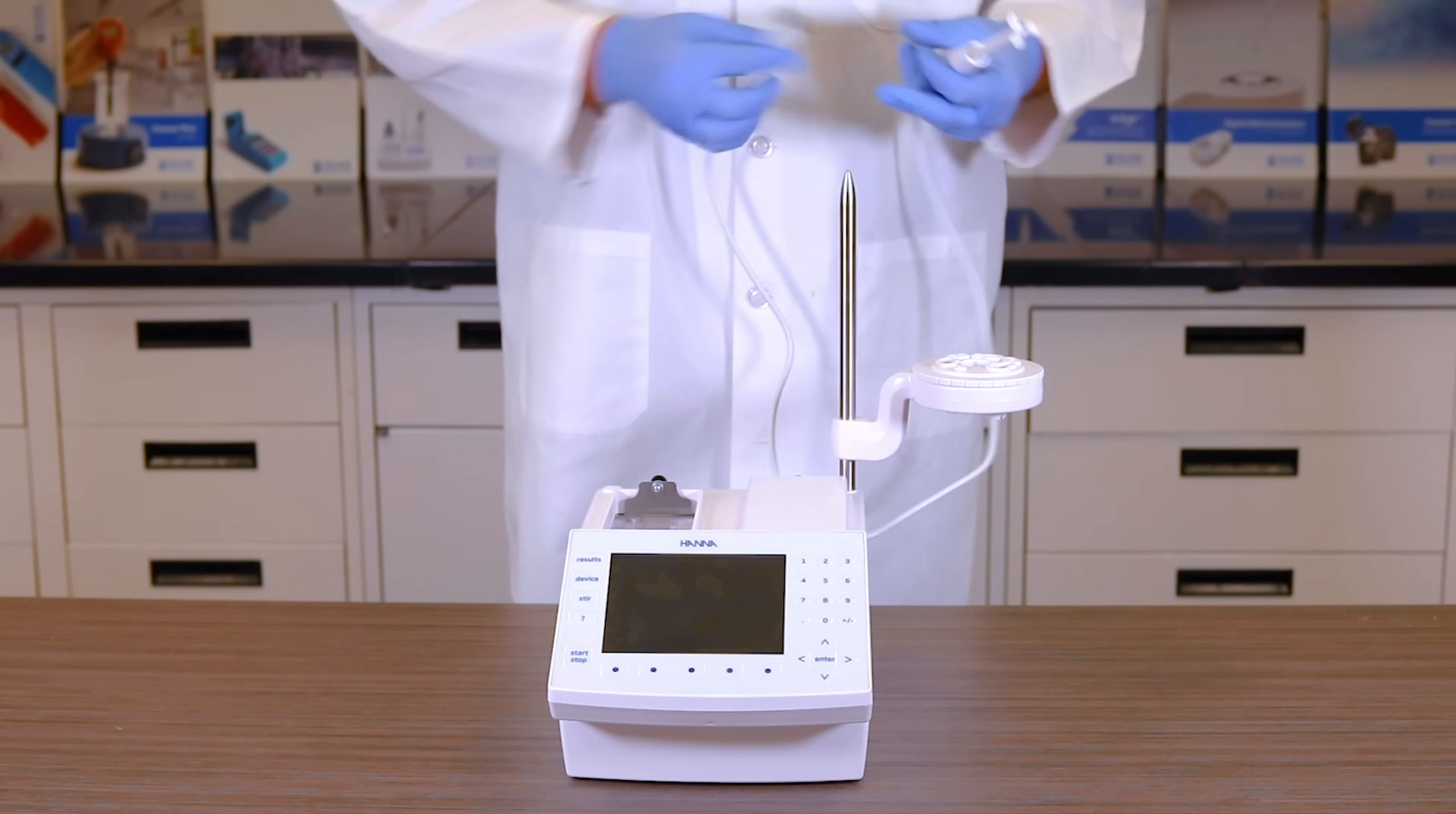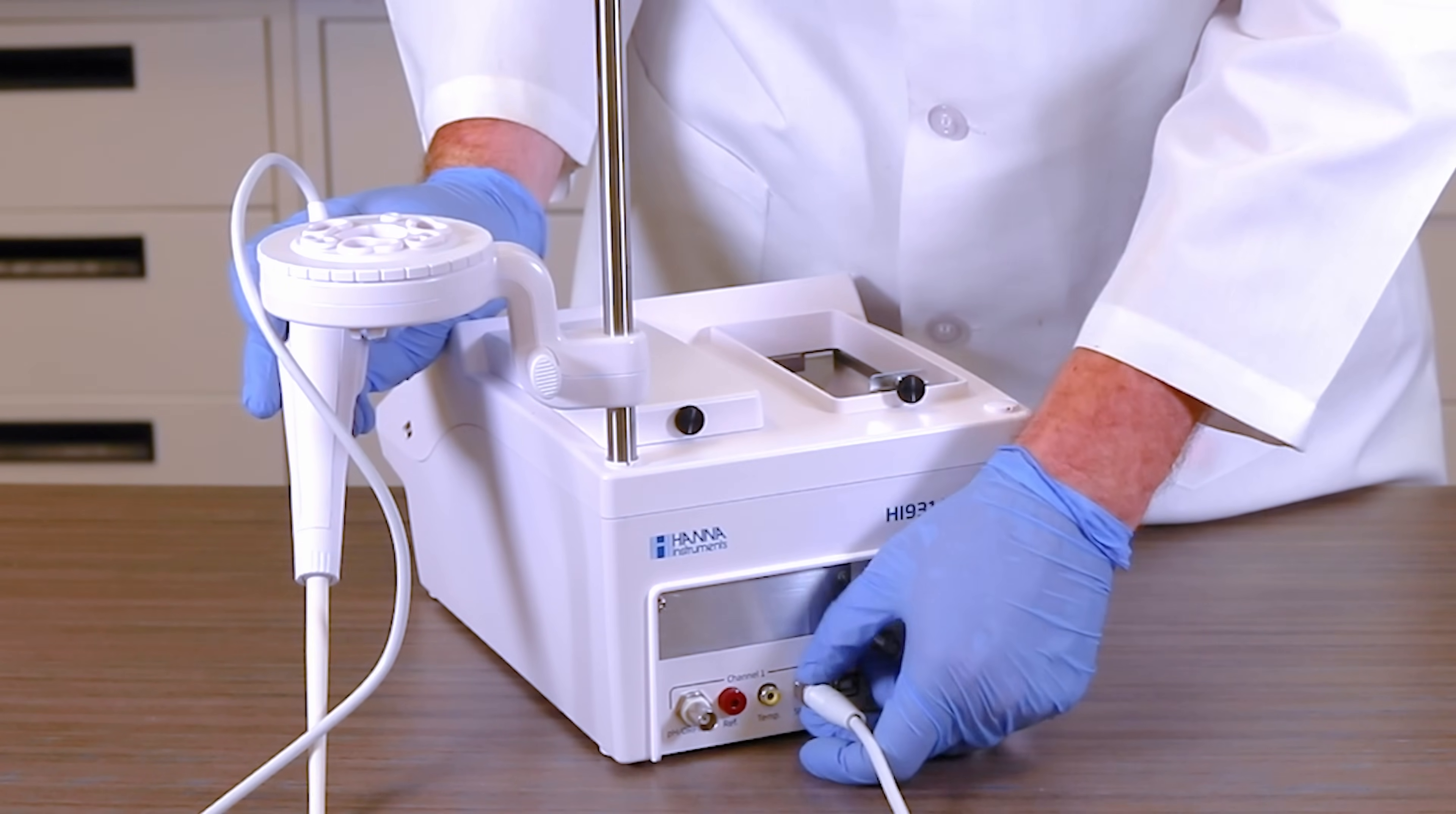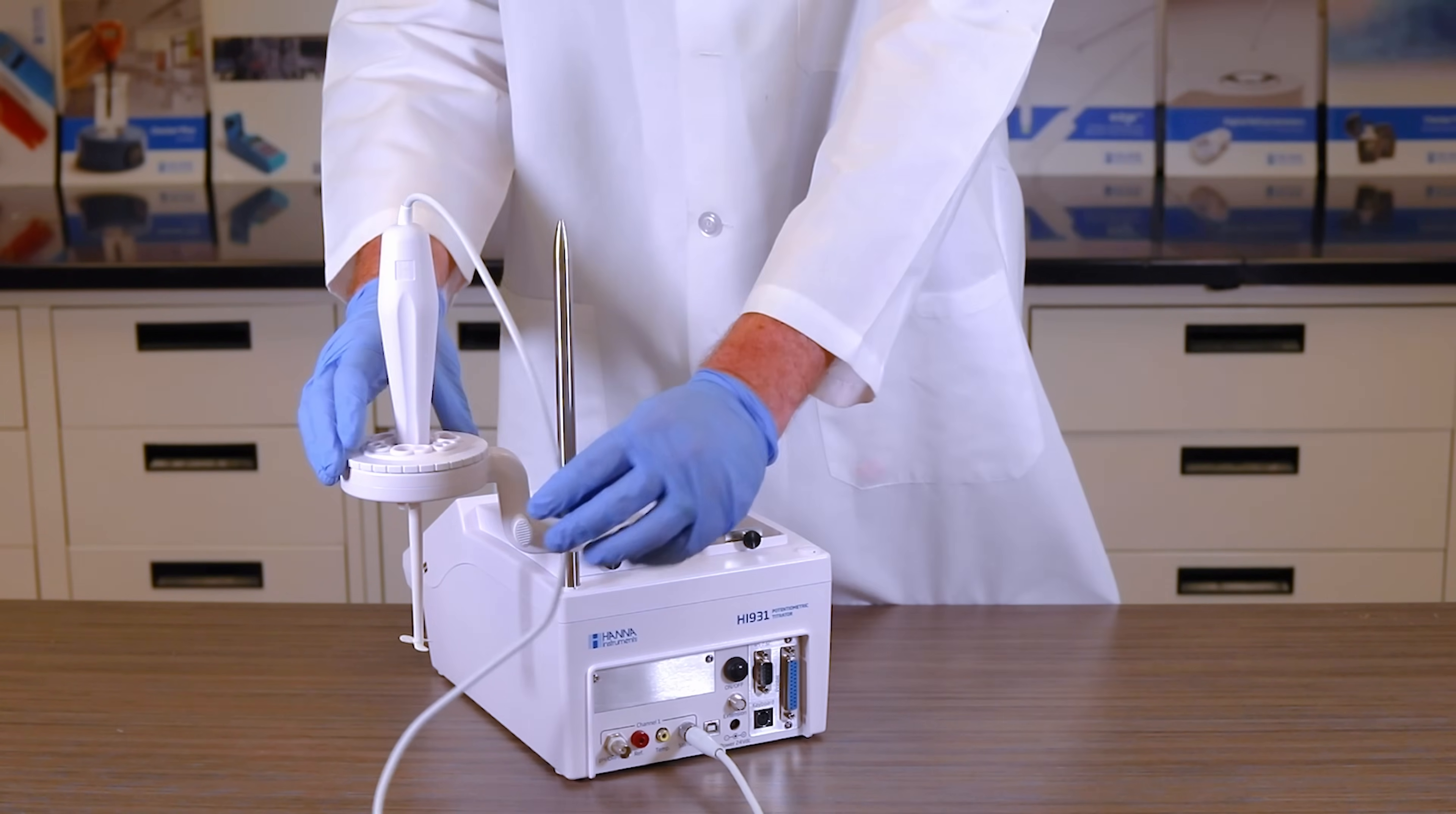Find your overhead stirrer and plug it into the back of your titrator. Then, place it into the middle slot of the plastic assembly holder.